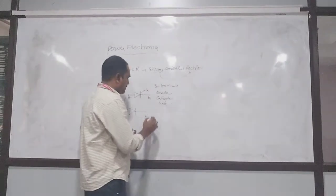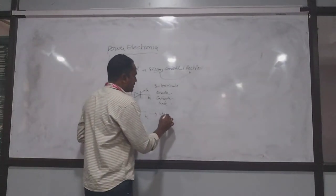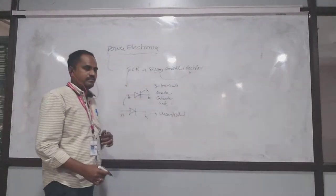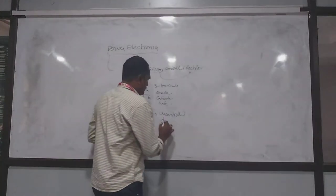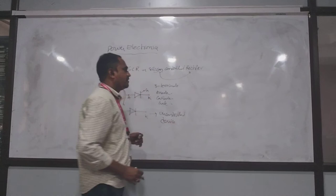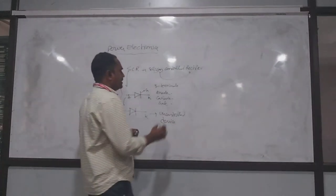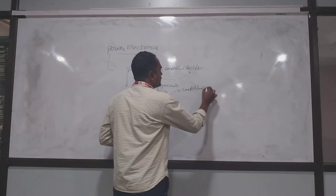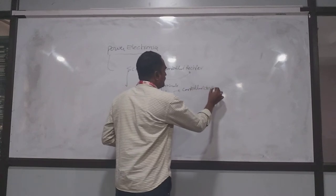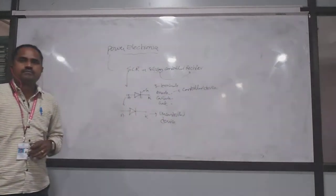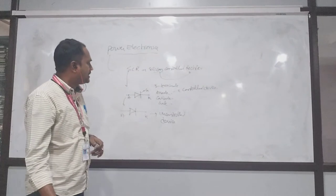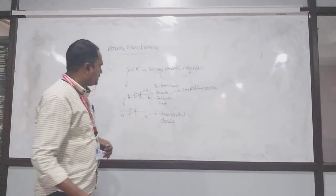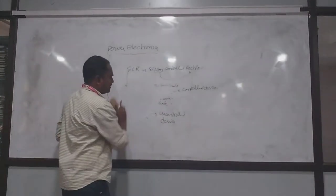SCR is a controlled device because it has a gate terminal which controls the output by providing a gate pulse across the gate and cathode terminals. Next, its construction — SCR is a four-layer PNPN device with three terminals: anode, cathode, and gate.